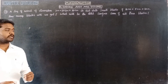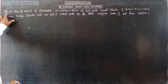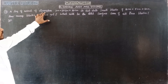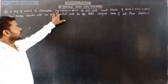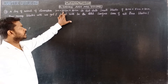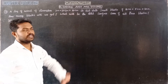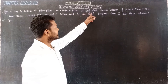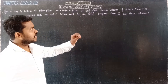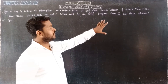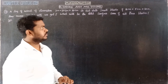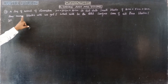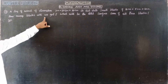Question number 3: A log of wood of dimensions 2 meters by 20 centimeters by 10 centimeters is cut into small blocks of 10 centimeters by 5 centimeters by 4 centimeters. How many blocks will we get?